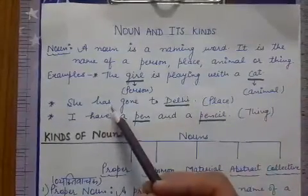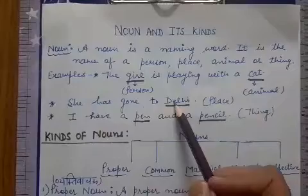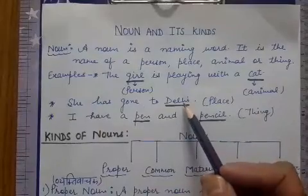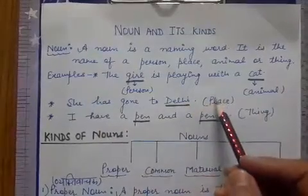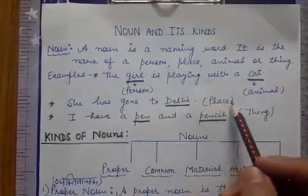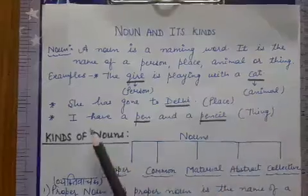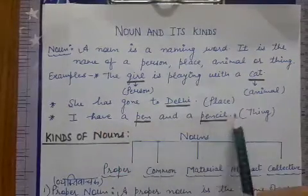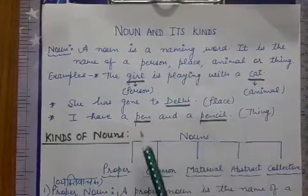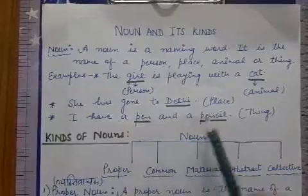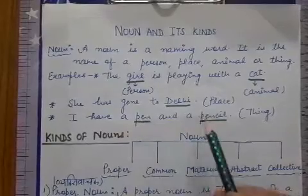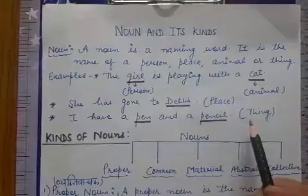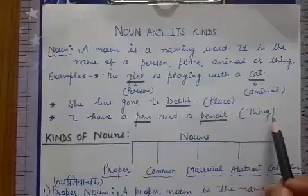Next sentence: 'I have a pen and a pencil.' So what are pen and pencil? These are things. So things are also nouns — the names of things count as nouns.